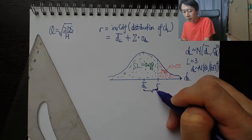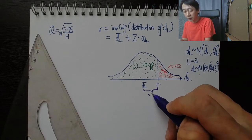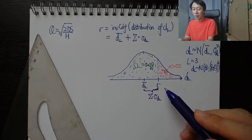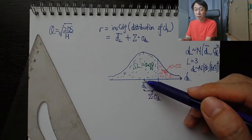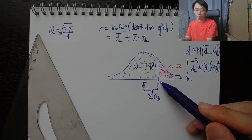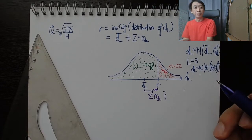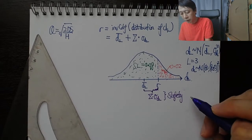What is interesting is perhaps this part. This is the part that we call, first of all formula wise, it's z times sigma dL. Because clearly r is made up of dL, the mean demand during lead time, plus z times sigma dL that gets us to r. Now this term has got a name, it's called the safety stock.